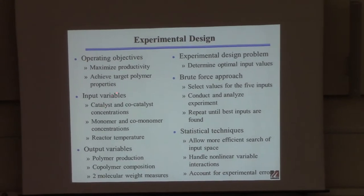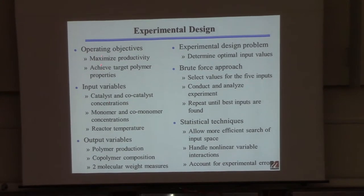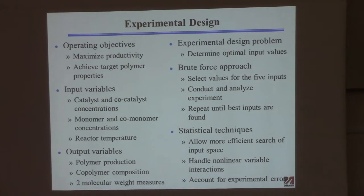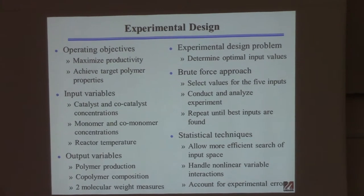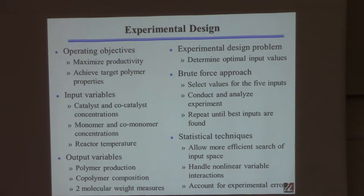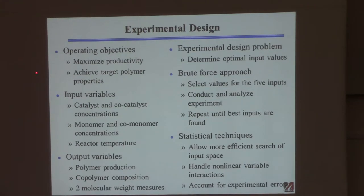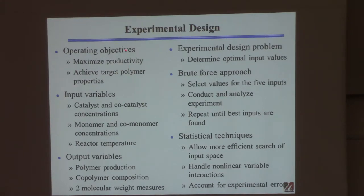These are the five input variables. If you're operating this system at scale — like a big industrial reactor — you'd want to make as much polymer as you could, because every pound you make you can sell. You also have to achieve certain properties of the polymer, since the chains can be very complex.